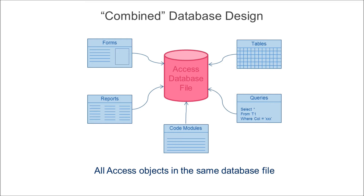Here is an image of a database that has not been split. We have a single Access database file, an accdb file, and it has contained within it all the various things you'd expect to find in an Access database: forms, reports, code modules, macros, queries, tables — they're all in the same single file. This is the appropriate design if you have a single-user database that you're going to have on your machine for personal use, or on someone else's single machine for their personal use.